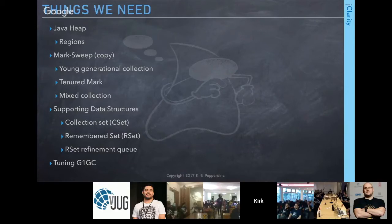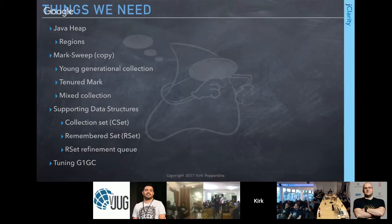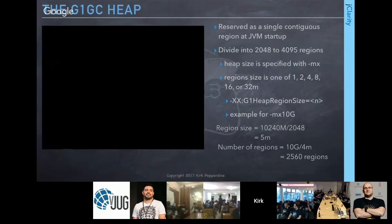With the right cost model and inputs, we can come up with reasonable ways to tune G1GC. Kirk has tuned approximately 3,000 JVMs across various clusters so far this year, including being at the tail end of tuning Wikimedia's JVMs.